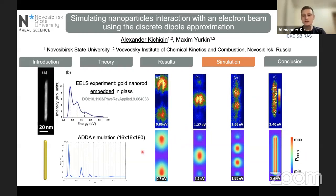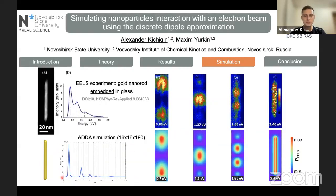As some of you who use ADDA know, ADDA is a console tool which does not produce images by itself. So we made a Python library to automate the simulations and automatically generate both the spectrum images and the plasmon map images. Those images are generated by the Python library with no additional work from tools like Origin or similar software you might use to generate spectra or plasmon maps.